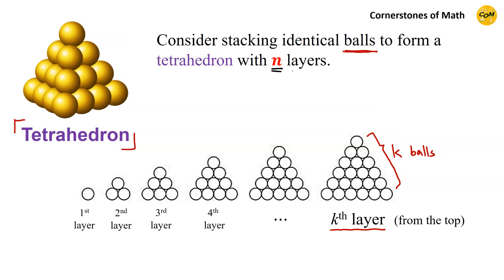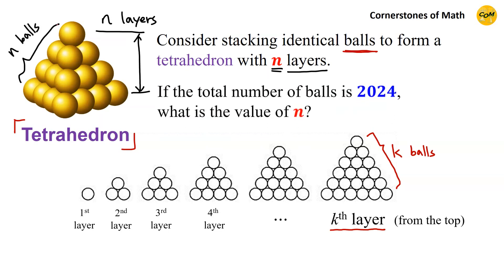Now, let n be the total number of layers in this tetrahedron, which means that each side of the tetrahedron consists of n balls. If the total number of balls in a tetrahedron is 2024, what is the value of n, the number of layers?